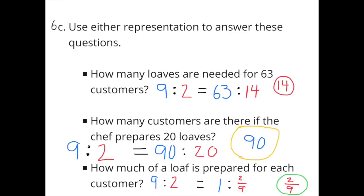C. Using the ratio to answer questions: A nine-to-two ratio is the same as a sixty-three to fourteen ratio, so fourteen loaves are needed for sixty-three customers. A nine-to-two ratio equals a ninety-to-twenty ratio, so there are ninety customers if the chef prepares twenty loaves. A nine-to-two ratio is the same as a one to two-ninths ratio, so two-ninths of a loaf is prepared for each customer.